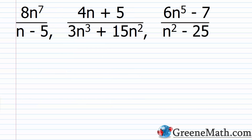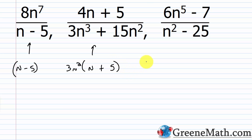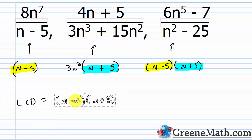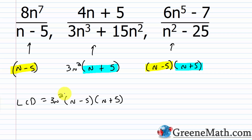Final example with three denominators: n−5, 3n³+15n², and n²−25. Factor them: n−5 stays as is; 3n³+15n² = 3n²(n+5); and n²−25 = (n−5)(n+5) by difference of squares. For the LCD: n−5 appears in the first and third — once each; n+5 appears in the second and third — once each; and 3n² only appears in the second. So the LCD is 3n²(n−5)(n+5).